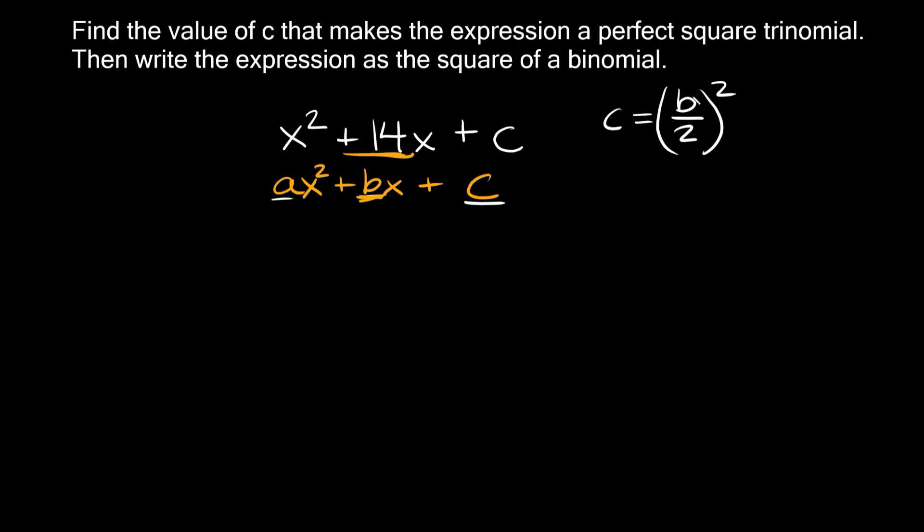To solve for c over here we're going to plug in a positive 14 for b here. So we're going to get that c is equal to 14 over 2 squared. 14 over 2 is 7, so c is equal to 7 squared which is 49. So c is equal to 49.